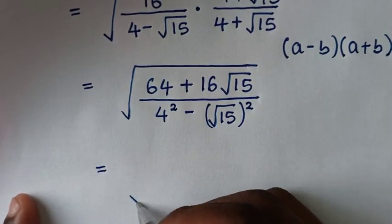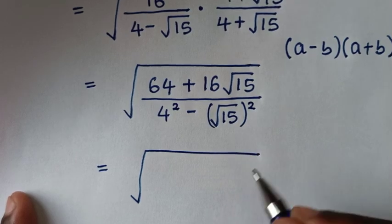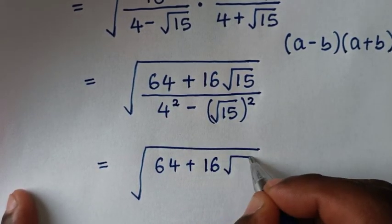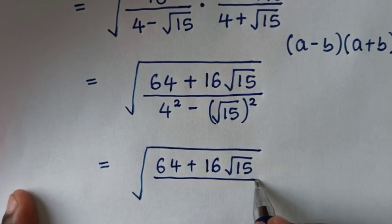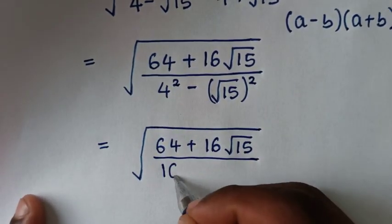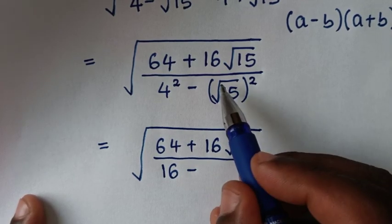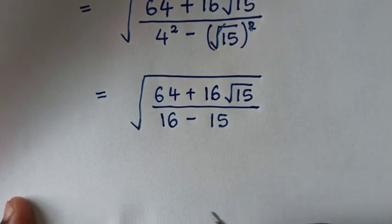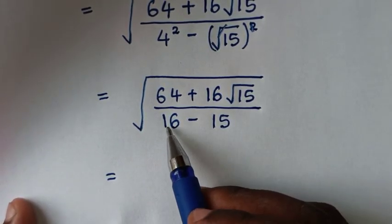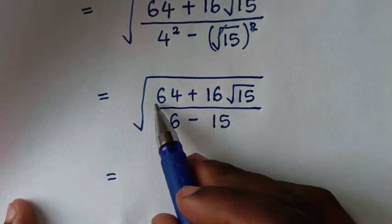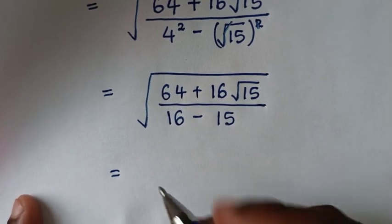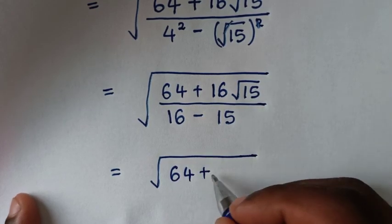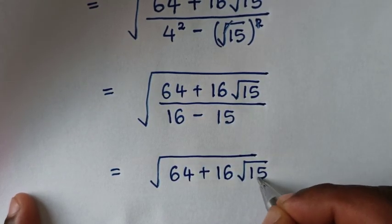Then it will be equal to square root of 64 plus 16 square root of 15, then over 4 squared. 4 squared is 16, minus — here the square root cancels the square — so it will be minus 15. Then it will be equal to: from the denominator, 16 minus 15 is 1, so it will be over 1, giving us square root of 64 plus 16 square root of 15.